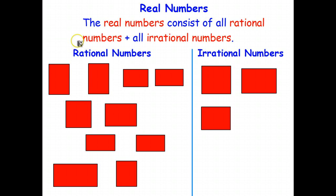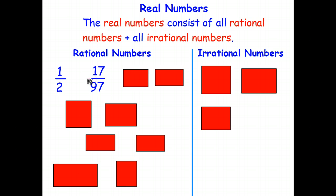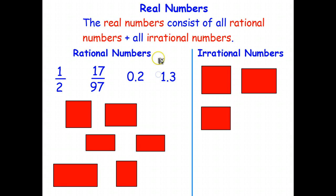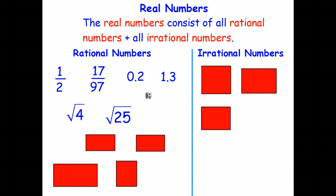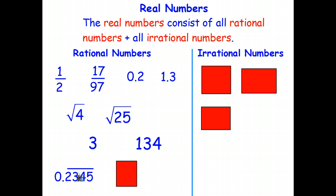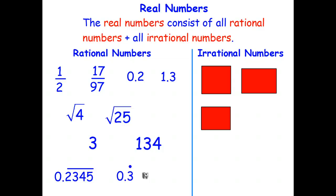So what are the real numbers? Well, rational numbers — examples are one half and 17 over 97. Terminating decimals are rational numbers. Some square roots can be rational numbers: those that are square roots of perfect squares, so the square root of 4 is 2 and the square root of 25 is 5. Whole numbers are also rational numbers. And repeating decimals such as 0.3 recurring or 0.2345 recurring are all examples of rational numbers.